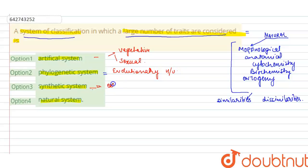to the artificial system of classification. Hence, our option for this question is natural system of classification, that is Option 4, natural system of classification. Thank you.